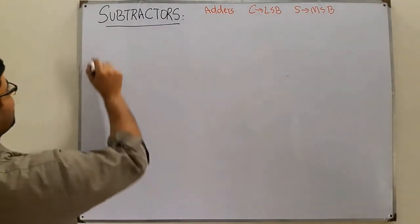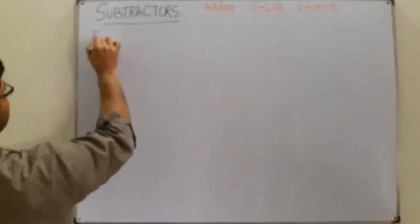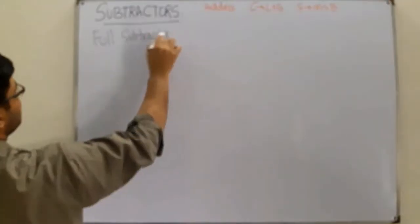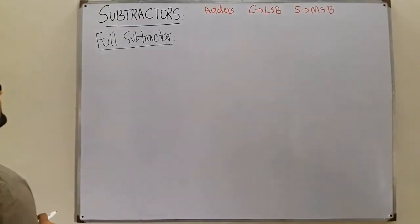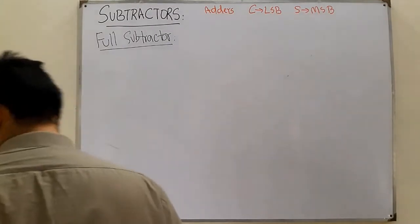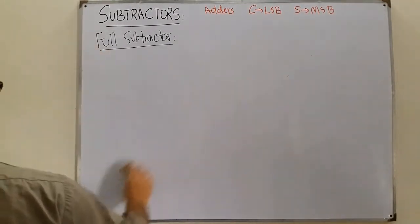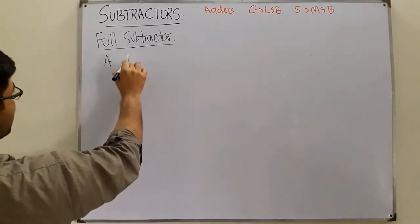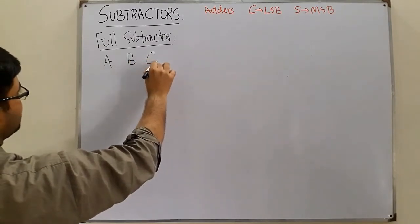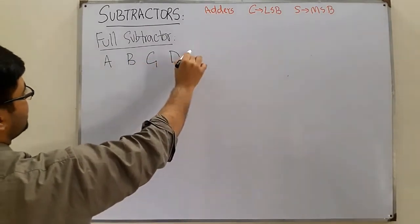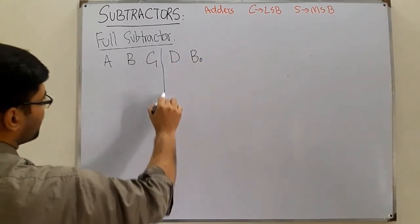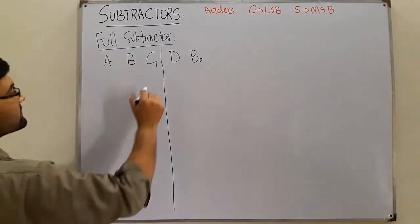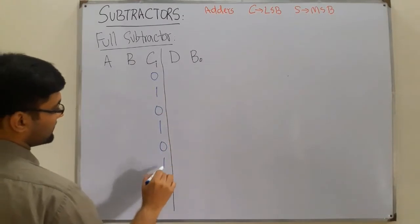Moving to the full subtractor: this performs subtraction while accounting for a previous borrow. It has three inputs — A, B, and C_in (borrow input) — and two outputs: difference and borrow output. With three inputs, there are 2³ = 8 input combinations.